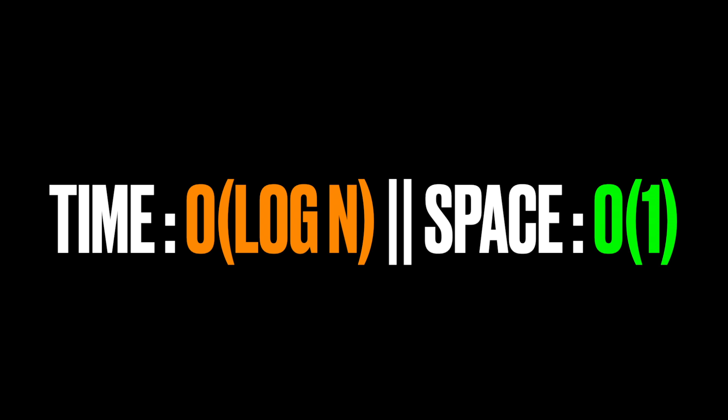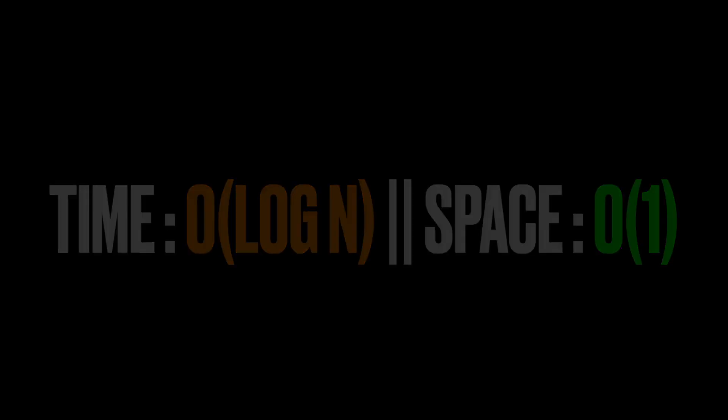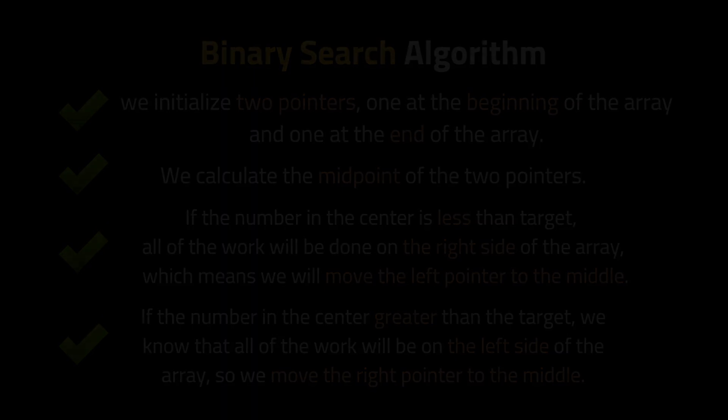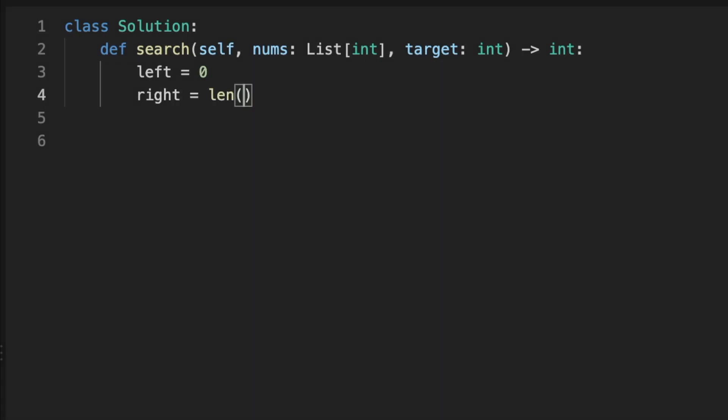The space complexity is O(1) since we are not allocating any additional space in memory — we only use a few variables. Now let's write the pseudocode. We initialize two pointers: left starts at the beginning and right starts at the end. We calculate the middle of the two pointers. If the number at the middle is smaller than the target, we move the left pointer to the middle. If the number at the middle is bigger than the target, we move the right pointer to the middle.